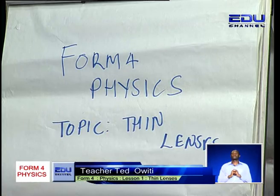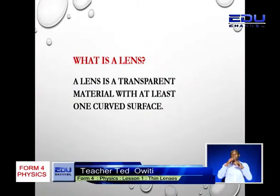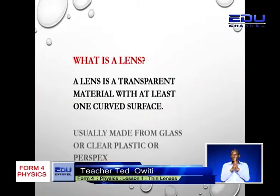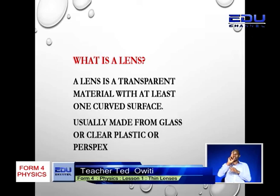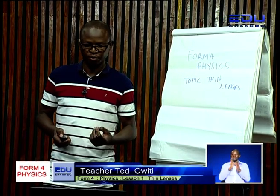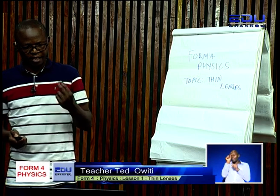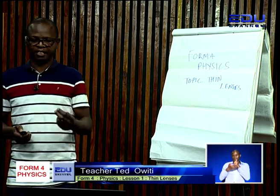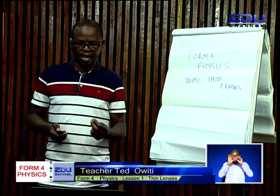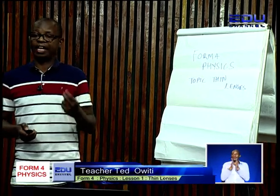So, what is a lens? A lens is a transparent material with at least one curved surface. It is usually made of glass or clear plastic. But what is a thin lens? A thin lens is a lens whose thickness is very small compared to the radii of curvature of the lens surfaces.